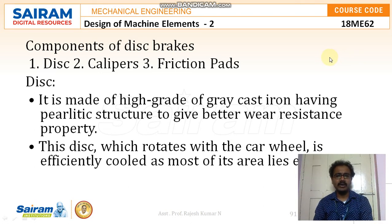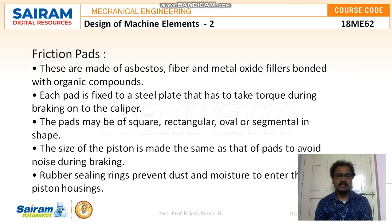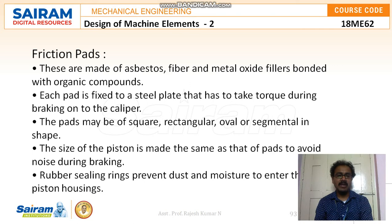The disc is usually made of high-grade gray cast iron having a pyrolytic structure to give better wear resistance. The disc rotates with the car wheel and is efficiently cooled as most of its area lies exposed. The calipers are V-shaped and are in two halves; each half has a pad bonded to a steel plate, a steel piston, and a brake cylindrical housing bolted together. Both halves are hydraulically linked so that equal pressure may be applied on the pads through floating pistons, with hydraulic pressure applied only on one side of the pistons. Friction pads are made of asbestos fiber and metal oxide fillers bonded with organic compounds; each pad is fixed to a steel plate. The pads may be square, rectangular, oval, or segmental in shape. The piston size is made the same as that of the pads to avoid noise during braking, and rubber sealing rings prevent dust and moisture from entering the piston housings.